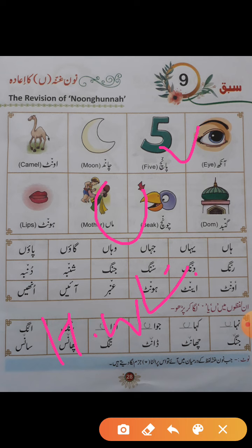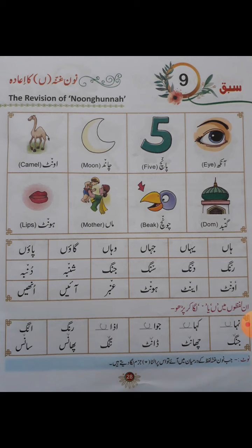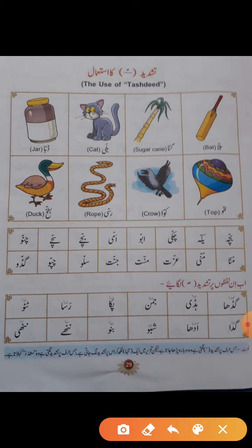اب نیکسٹ پیج پر ہے ہمارا تشدید کا استعمال۔ تشدید جہاں پر لفظ کو دو بار پڑھتے ہیں وہاں لگائی جاتی ہے — جیسے بلل میں لام کو دو بار پڑھا ہے: بلل۔ پھر ہے: گنہ، بلل، بیٹ، گنہ، شکرکین، بلی، ڈبا، لٹو، کوہ، رسی، اور بطخ۔ نیچے پڑھیں: بچہ، یکہ، چکی، ابو، امی، بچے، سچے۔